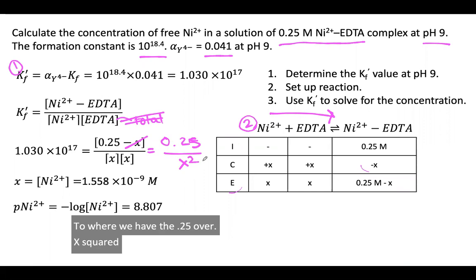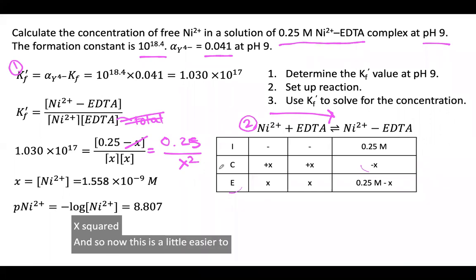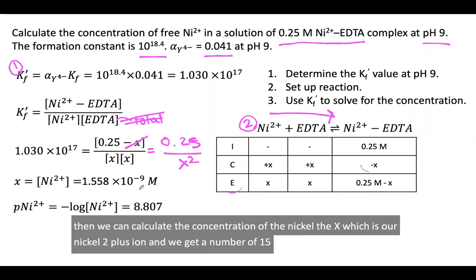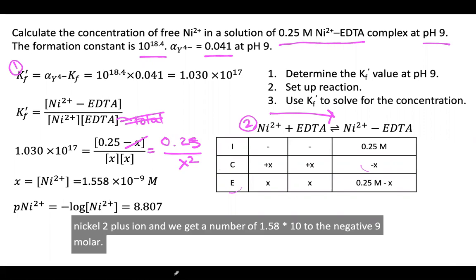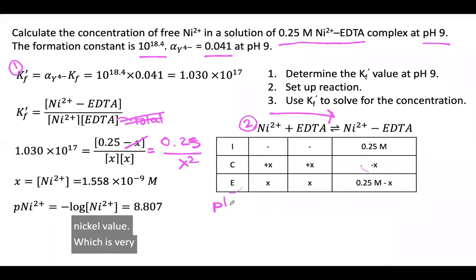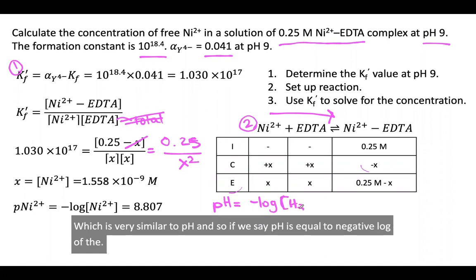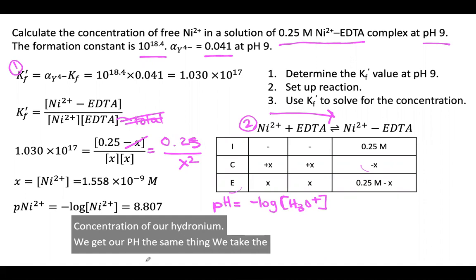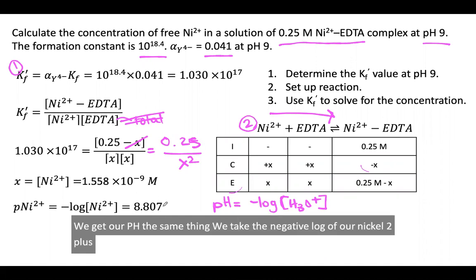Now this is a little easier to simplify. We can cross-multiply and then calculate the concentration of the nickel, the X, which is our Ni2+ ion, and we get 1.558 times 10 to the negative 9 molar. We have our concentration, but a useful value to have is this pNi value, which is very similar to pH. If we take the negative log of our Ni2+ concentration, it comes out to 8.807.